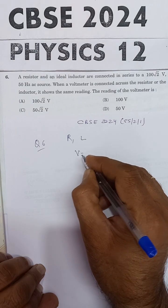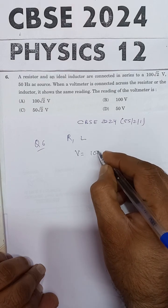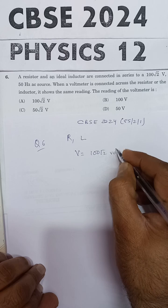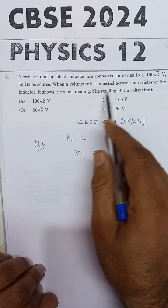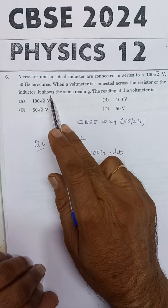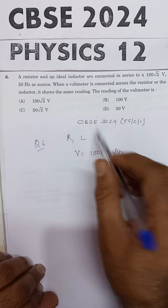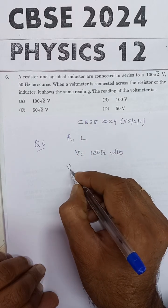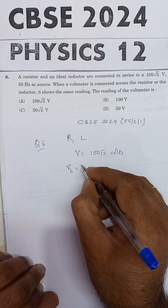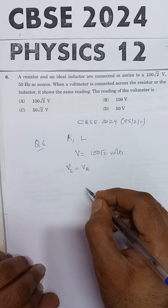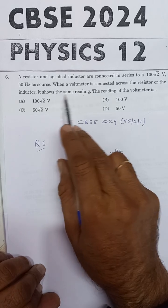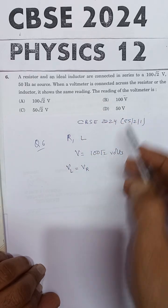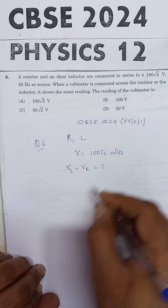The applied potential difference is 100 root 2 volts. When a voltmeter is connected across the resistor or the inductor, it shows the same reading. Given that VL equals VR. The reading of the voltmeter is what we need to find.